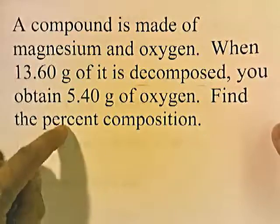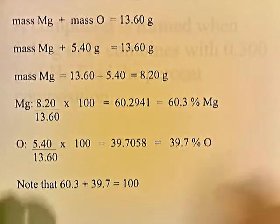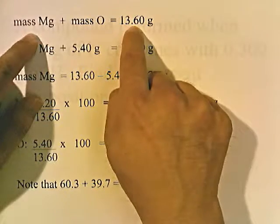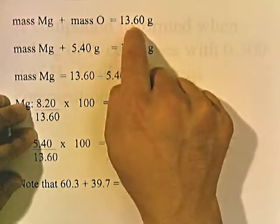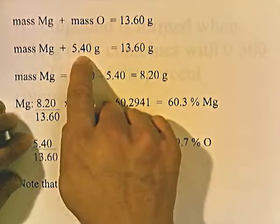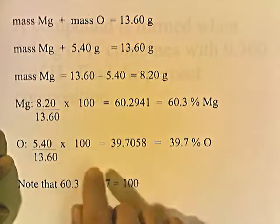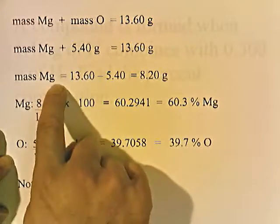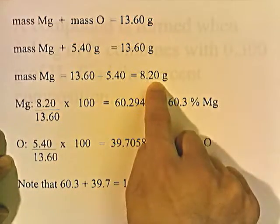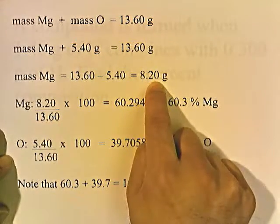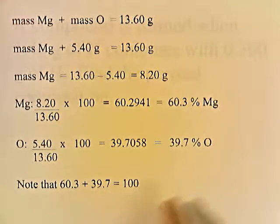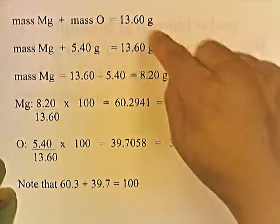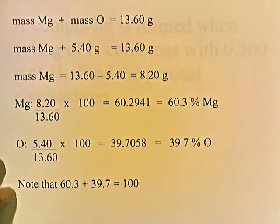The compound is made of magnesium and oxygen, and the total mass of our sample is 13.6 grams. Of this 13.6 grams, 5.4 grams is oxygen. So to find the amount of magnesium, it's 13.6 minus 5.4, which gives us 8.2 grams of magnesium. Now that we have the masses of the individual elements and the total mass of 13.6, we can find the percent composition.